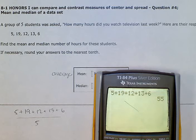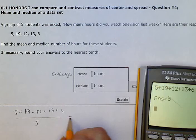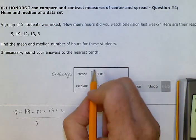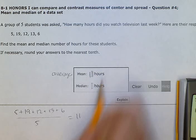And I'm going to divide that number by five. That gives me a mean of 11. That equals 11. So the mean or average was 11 hours.